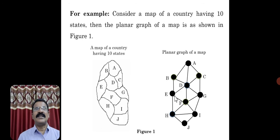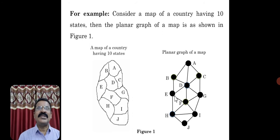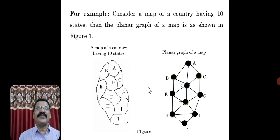Why is it called a conjecture? First, let me consider one example. I have considered a country having ten states, as you can see here. This is a map of a country having ten different states, and I have labeled all the states with names A, B, C, D, and so on.